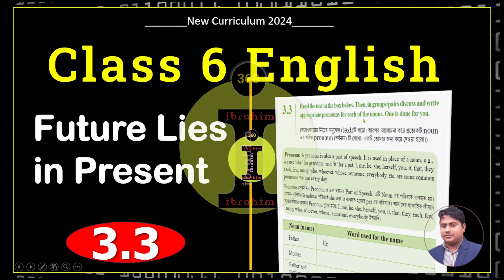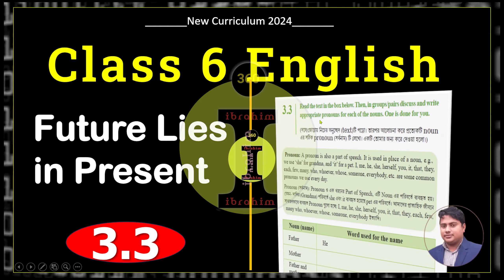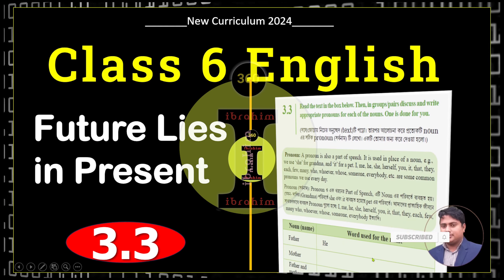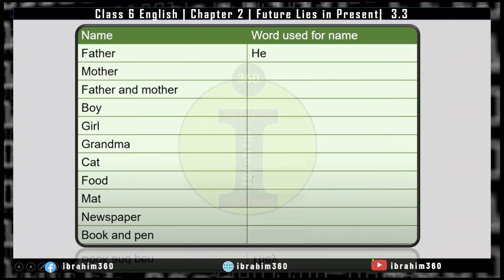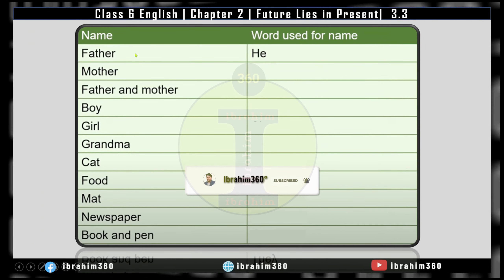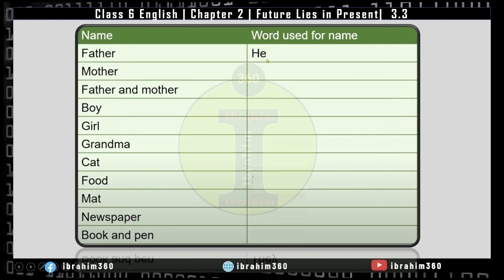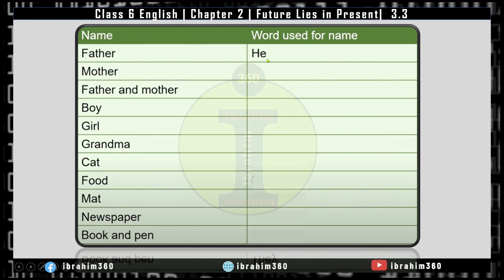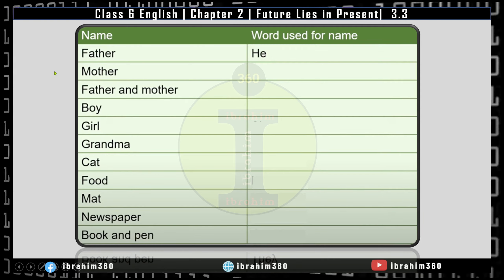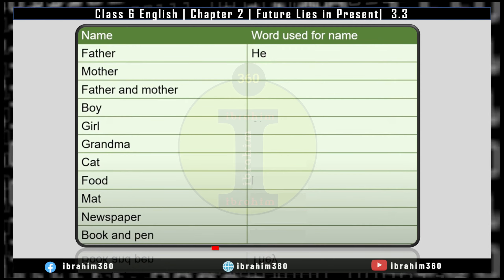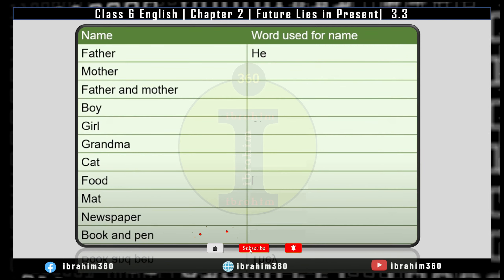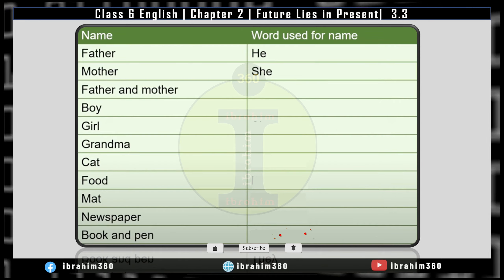We are going to read the text in the first section. We are going to read the name of the noun — it is 'he'. I mean the word 'sit' instead of noun. That is the noun. These are the pronouns. Mother is the noun.